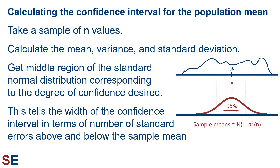So how do we calculate the confidence interval for the population mean using the data from one of our samples? First, we take a sample of n values. Then we calculate the mean, variance, and standard deviation of that sample. Then we get the middle region of the standard normal distribution corresponding to the degree of confidence desired.